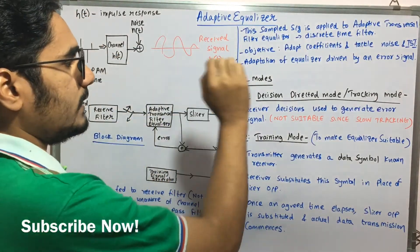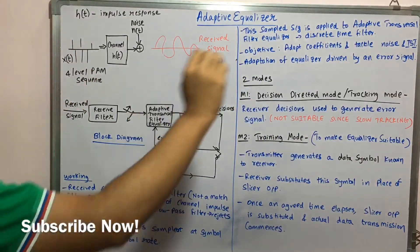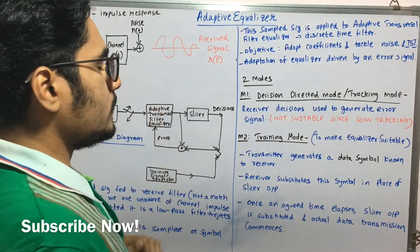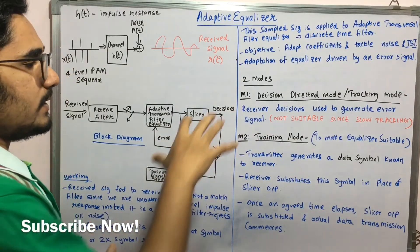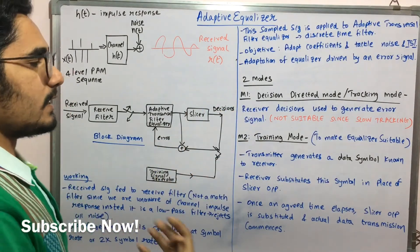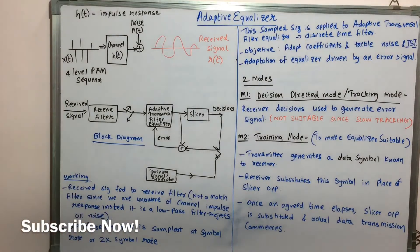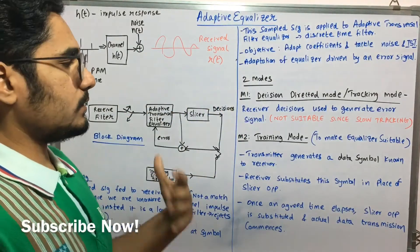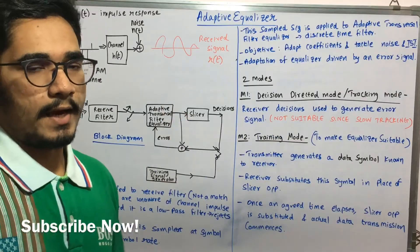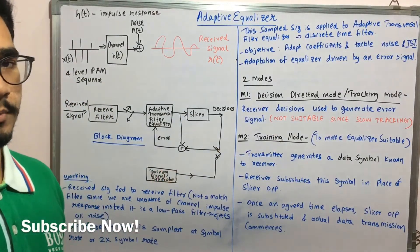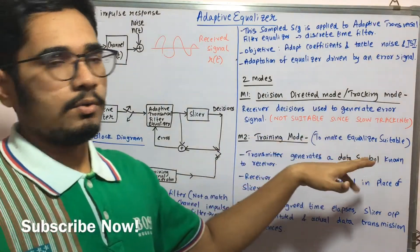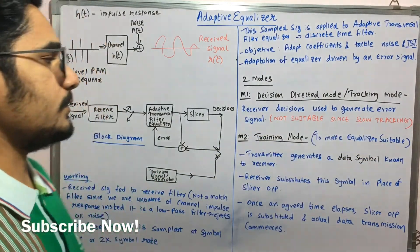So the very first mode is the decision directed mode or called as the tracking mode. So in this, whatever decisions are taken are solely taken by the receiver, which is used to generate the error signal. And so we just do not prefer this or it's not suitable because of its slow tracking activity. Now, since this is the initial phase at this process or at this stage, we do not go with the slow tracking since it's time consuming.